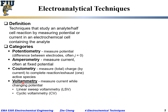Voltammetry — 'volt' is a unit for potential and you measure current while controlling potential. In this case you change and control the potential and measure the resulting current. There are two common methods within voltammetry: one is called linear sweep voltammetry or LSV, and the other is called cyclic voltammetry or CV — where you cycle the voltage or potential going in circles.